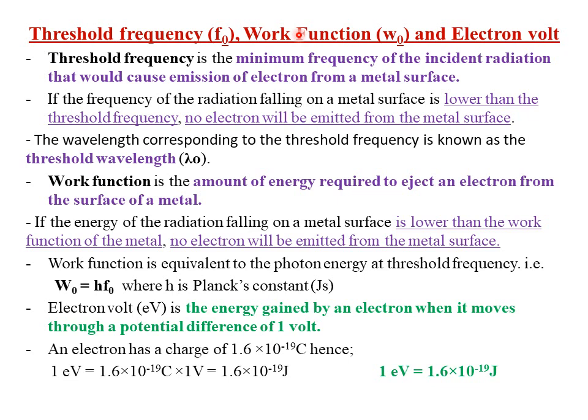Today we are defining a few terms. One is called the threshold frequency, which is denoted by F₀. Then two, we have what we call the work function, denoted by W₀. And lastly, we have what we call the electron volt.